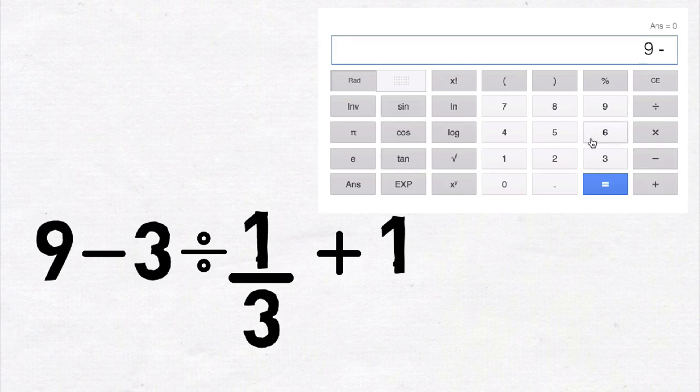So let's start entering the problem into this calculator: 9 minus 3 divided by one-third and finally plus 1. The calculator says 9 is the correct answer. Okay let me pause for a few seconds. If you see anything wrong with this answer please mention it in the comment section.